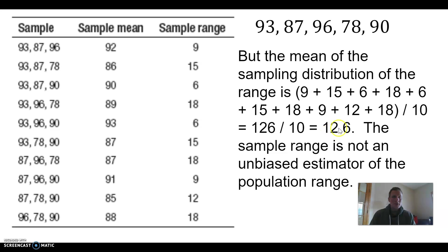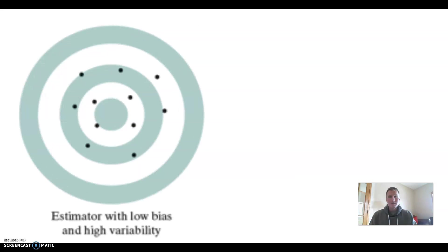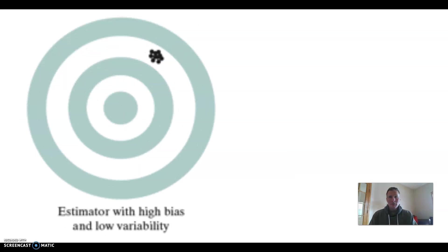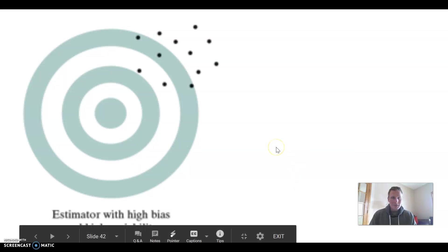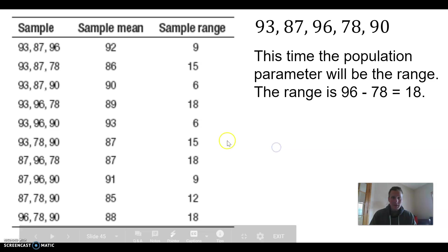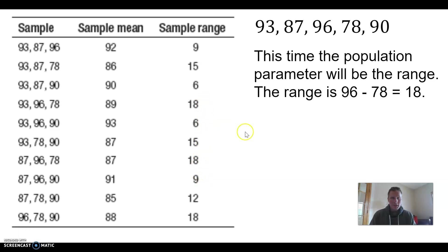The sample ranges only average out to 12.6. We tend to miss the target to the low side every time — too low, too low, too low. A couple of times we actually hit the target and got 18, matching the population range. Three times we hit the target, but most of the time we missed to the low side. So the sample range is a biased estimator of the population range.